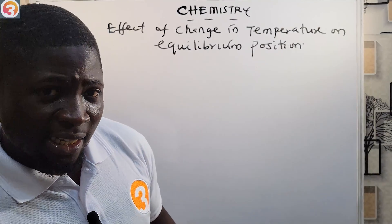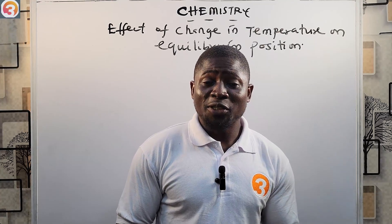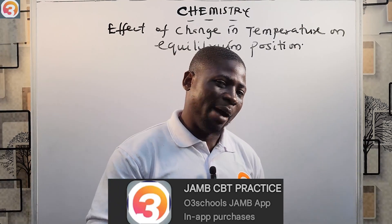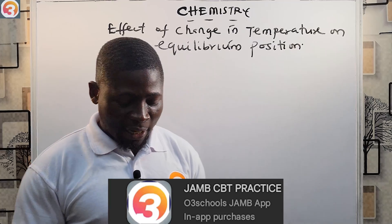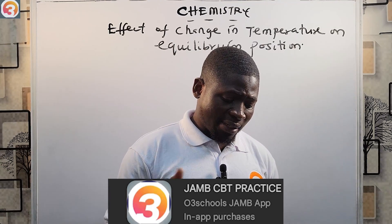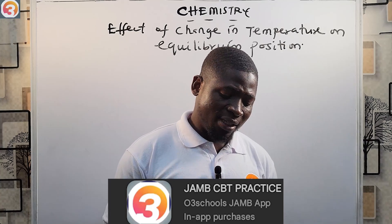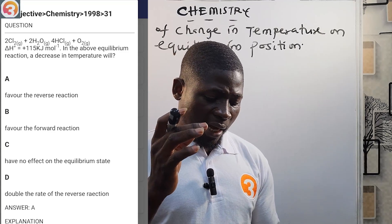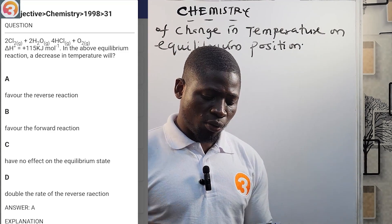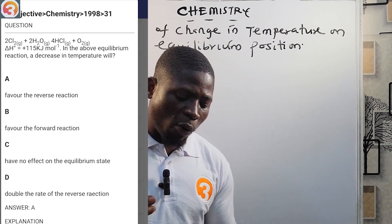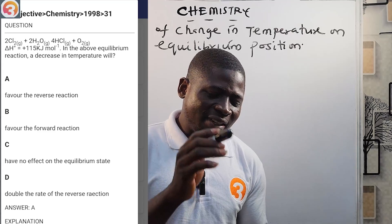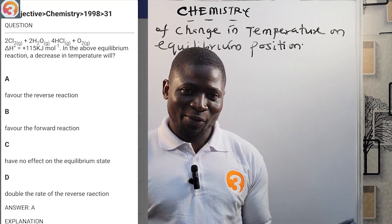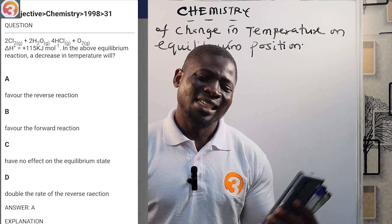This tutorial is sponsored by the O3 Schools Jam App — you must get that app for effective study and a good score in JAMB. We are given a reaction: 2Cl₂ + 2H₂O ⇌ 4HCl + O₂, with ΔH = +115 kJ/mol. The question asks: in the above equilibrium reaction, a decrease in temperature will — what?